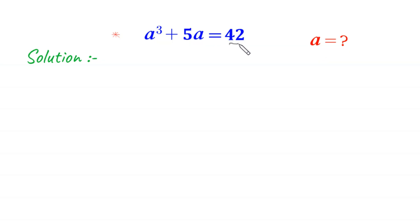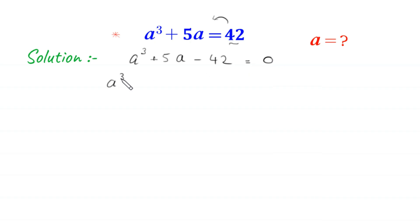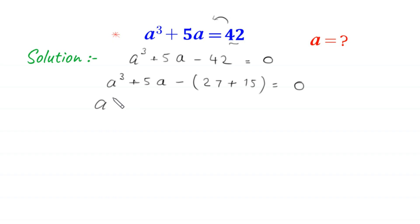Let us start by moving this 42 to the left hand side. So this equation will become a cubed plus 5 times a minus 42 is equal to 0. Next, we note that 42 is the same as 27 plus 15, so we rewrite: a cubed plus 5 times a minus 27 minus 15 is equal to 0.